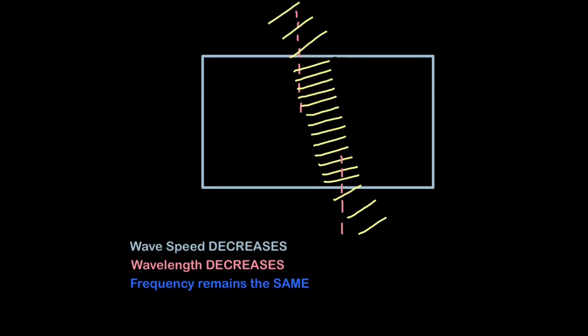Now, if you remember, frequency is the number of waves arriving at a point per second. Now, this may look like more waves, but because they're traveling slower, the overall frequency is the same. So frequency remains the same. Only wave speed and wavelength change as you move from one medium to another of different density.